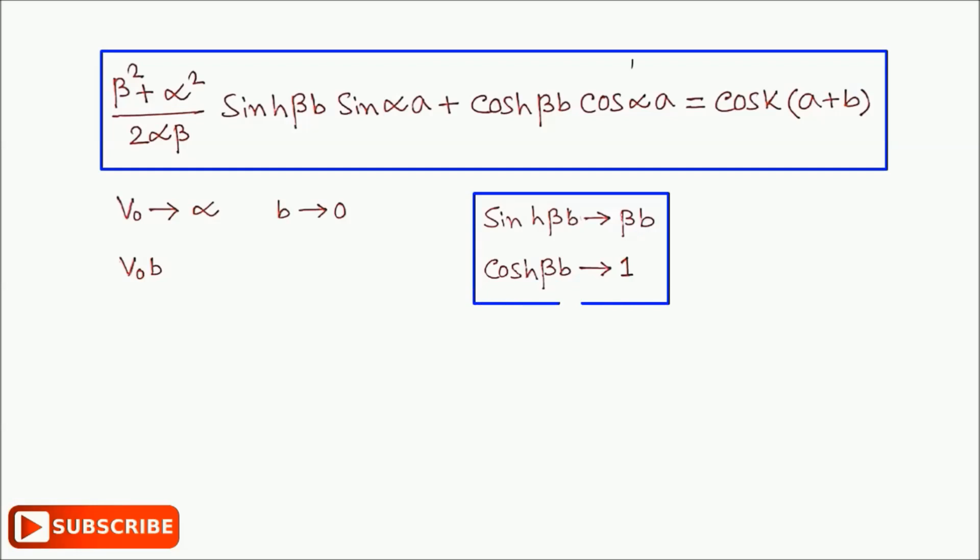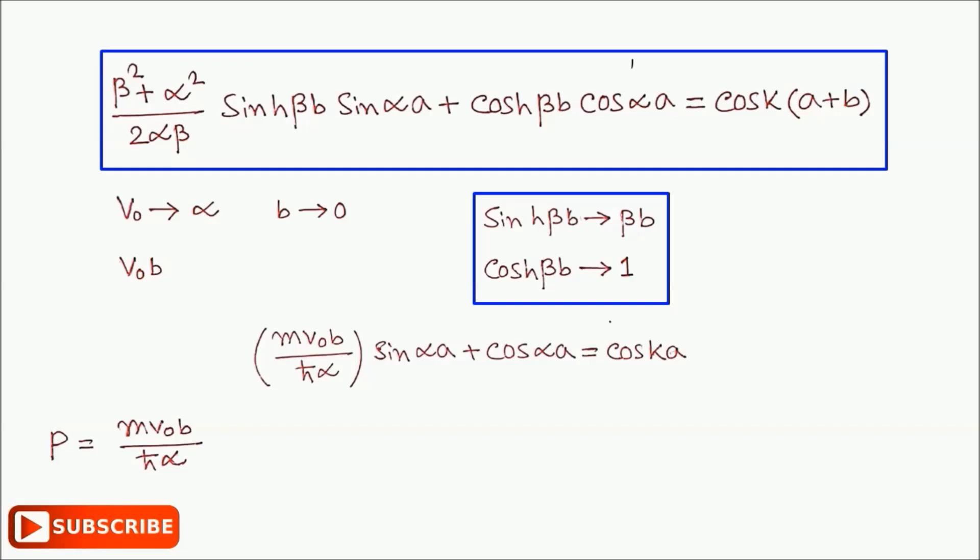After some simplification and assumptions, we get the final equation: P(sin(αa)/(αa)) + cos(αa) = cos(ka), where P = mV₀ba/(ℏ²), which is the measure of the area V₀b of the potential barrier.